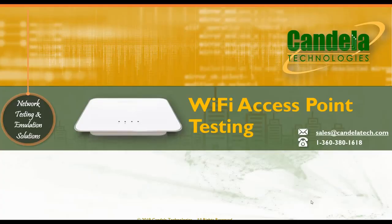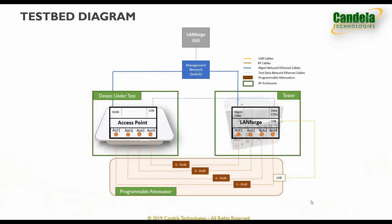This video demonstrates how to set up an access point test bed and how to create and run a simple access point test in the LANforge user interface. For the test setup we have two RF enclosures: on the left is the device under test RF enclosure containing the access point, and on the right is the tester RF enclosure containing the LANforge system, which acts like many stations to test the access point while generating traffic and making measurements.